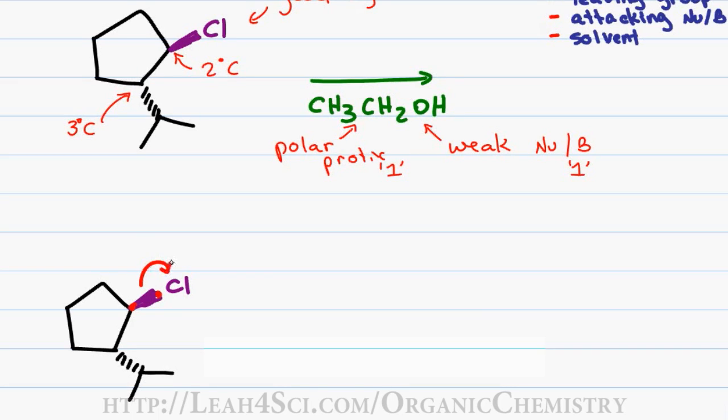The reaction begins when chlorine as a leaving group breaks away from our carbon chain leaving us with a secondary carbocation.